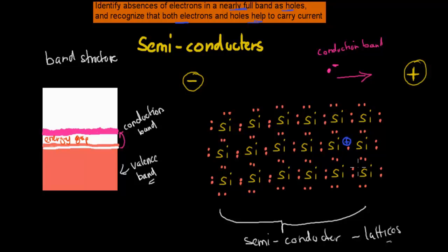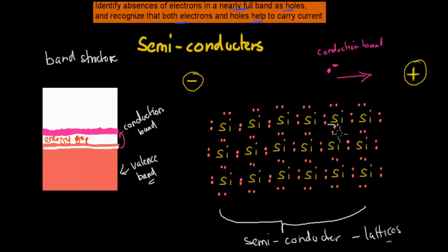Now here's the interesting part. When you apply the voltage, some of the electrons in the actual valence shell — not in the conduction band — will jump into the position of a positive hole, because they're also attracted to the positive side. So the electron moves and is now in the hole's position, but now where that electron used to be, we have a positive hole. Then the same thing happens again: another electron is attracted to that new positive hole, moves into it, and leaves a positive hole where it used to be. This keeps happening over and over.